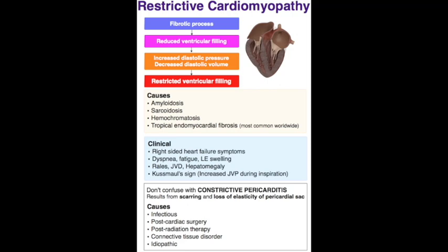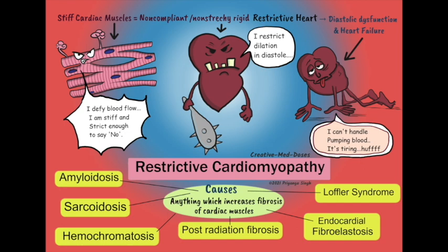For diagnosis, echo is first line and the diagnostic test of choice. You'll see non-dilated ventricles with normal to slightly thicker walls — it's the deposits, not hypertrophy. Diastolic dysfunction with marked dilation of both atria is seen, as deposits are only in the ventricles; the atria dilate to compensate. Systolic function is generally preserved early. Amyloidosis shows a bright speckled myocardium — the most common presentation.